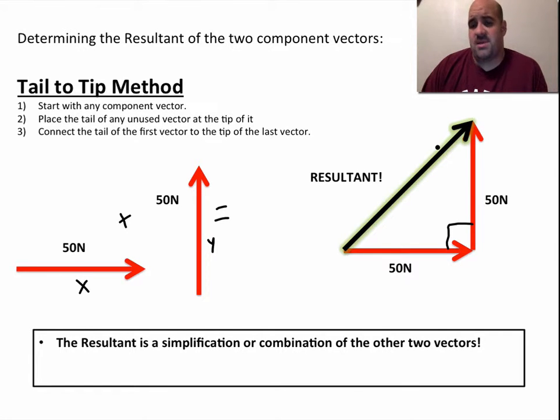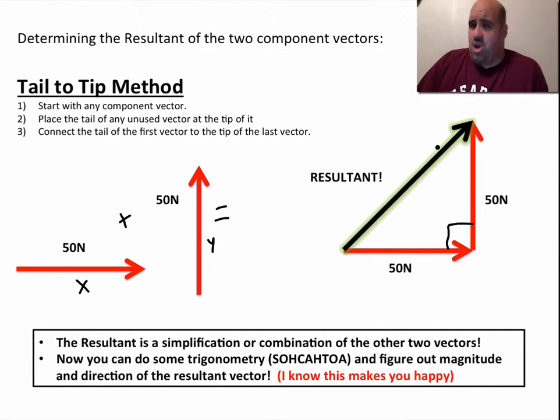You notice this is a right triangle, and I know how much you love trigonometry right now in physics. It's probably your favorite thing in the whole world, but you could actually do some trig. You could figure out this side right here, a squared plus b squared equals c squared. Or you could use tangent. Tangent equals opposite over adjacent. Inverse tangent would give you this angle theta right here. And you can figure out the resultant.